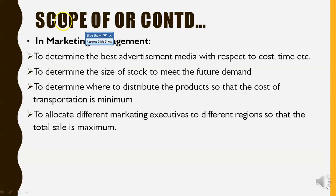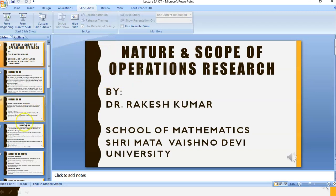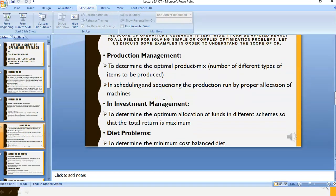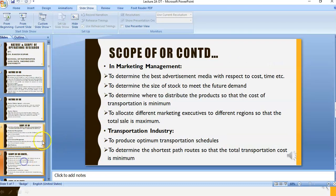In marketing management, operations research is used to determine the best advertisement media with respect to cost, time, etc., to determine the size of stock to meet future demand, to determine where to distribute products so that the cost of transportation is minimum, and to allocate different marketing executives to different regions so that the total sale is maximum.